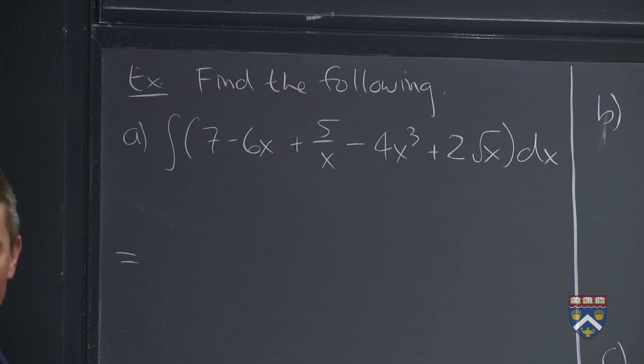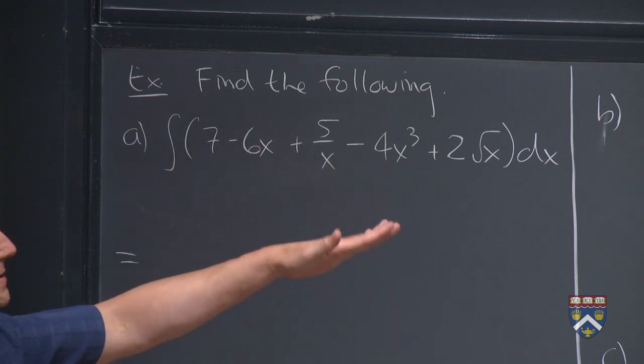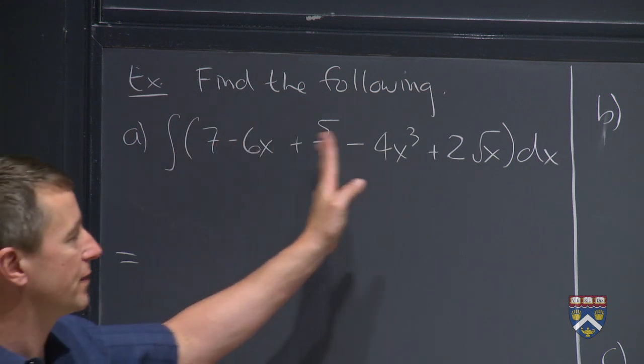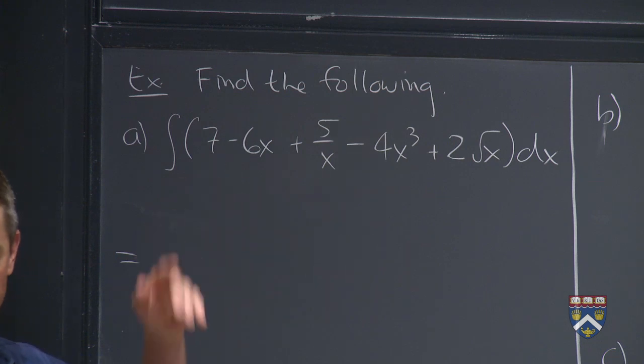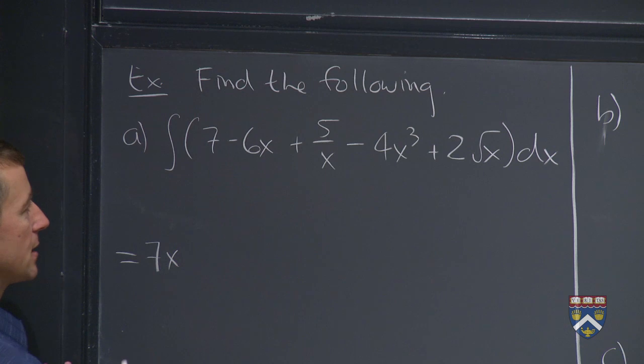So think to yourself, what function do you know whose derivative is 7? And notice that we're also using our rule about the sum rule, because we're going to take the antiderivatives of each one of these separately. That was our first property from before. So a function whose derivative is 7 is 7x.